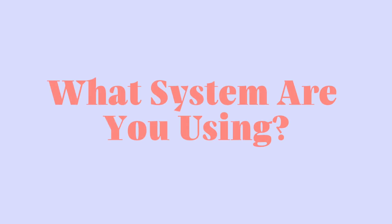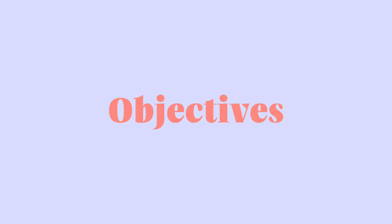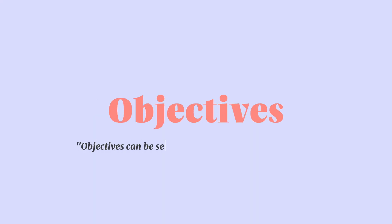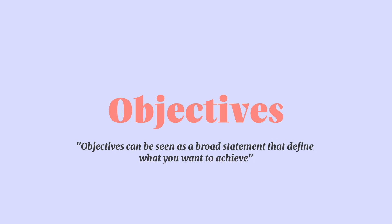The system I decided to use for tracking my goals in 2024 is called OKR. OKR stands for Objectives and Key Results, and it's used by a lot of organizations and businesses but can also be used in personal development. By using the OKR framework I've broken my goals into objectives, key results, and action steps. Objectives are broad statements that define what you actually want to achieve.